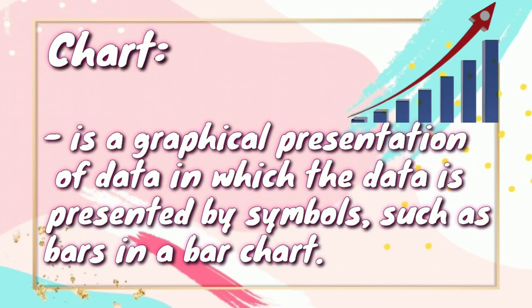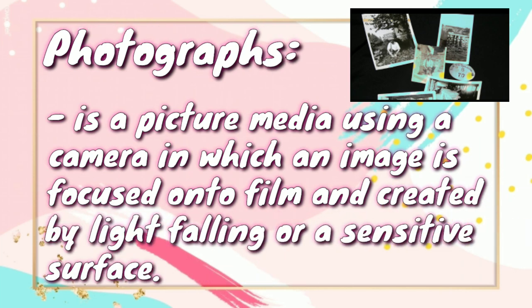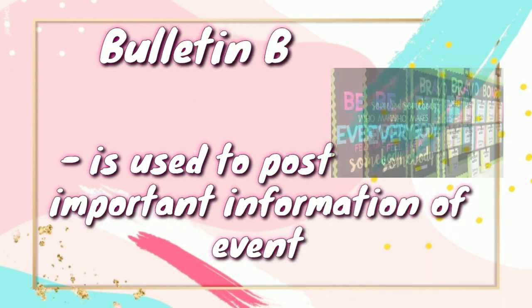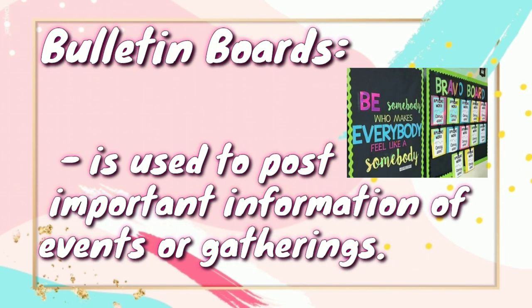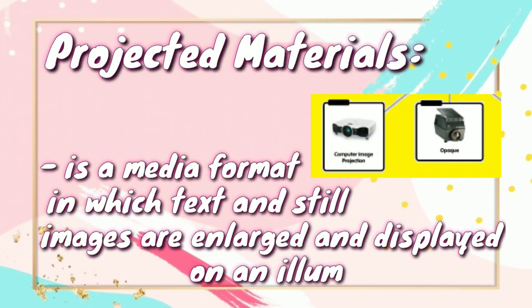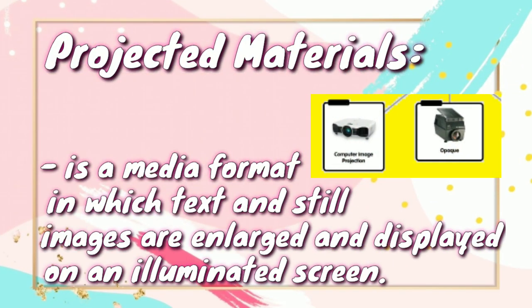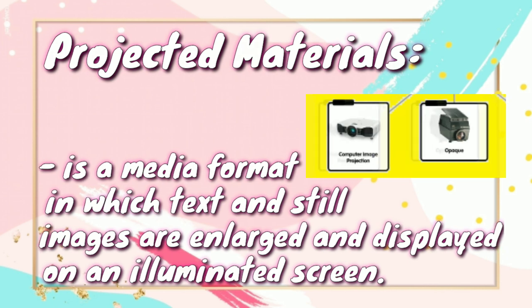A chart is a graphical presentation of data in which the data is represented by symbols such as bars in a bar chart. Photographs are picture media using a camera on which an image is focused into film, created by light falling on a sensitive surface. Bulletin boards are used to post important information about events or gatherings. The last type of visual material is projected materials — a media format in which text and still images are enlarged and displayed on an illuminated screen.